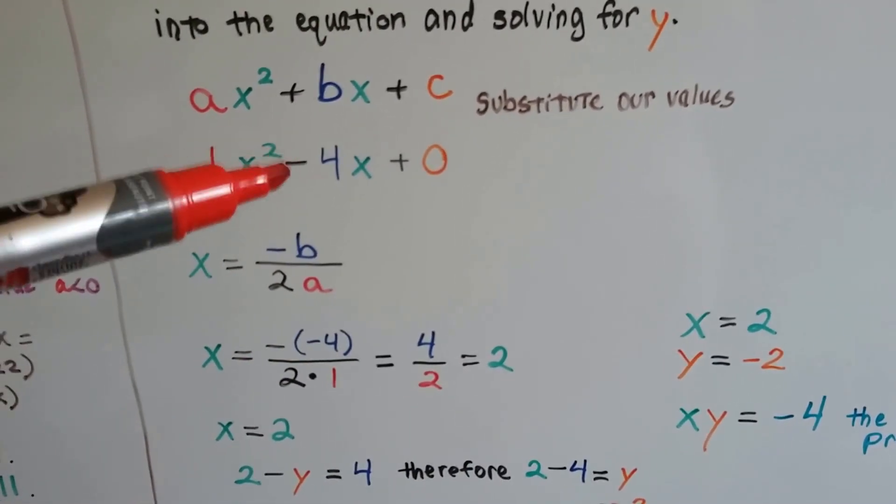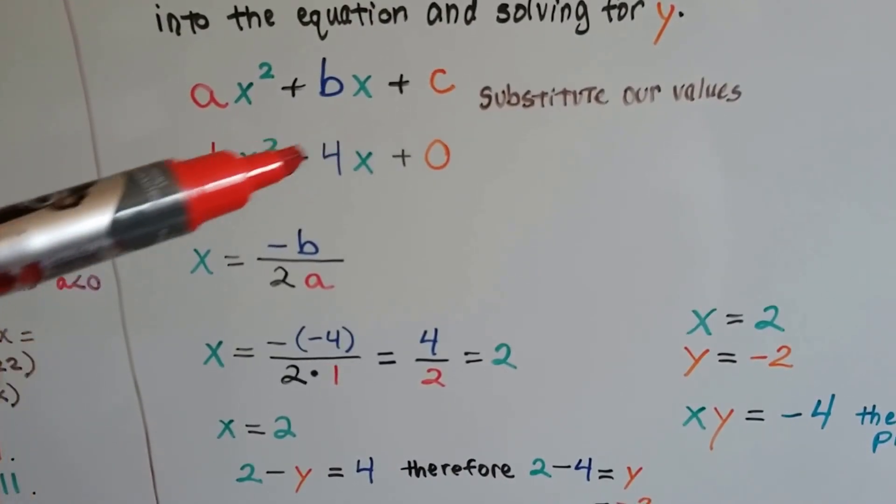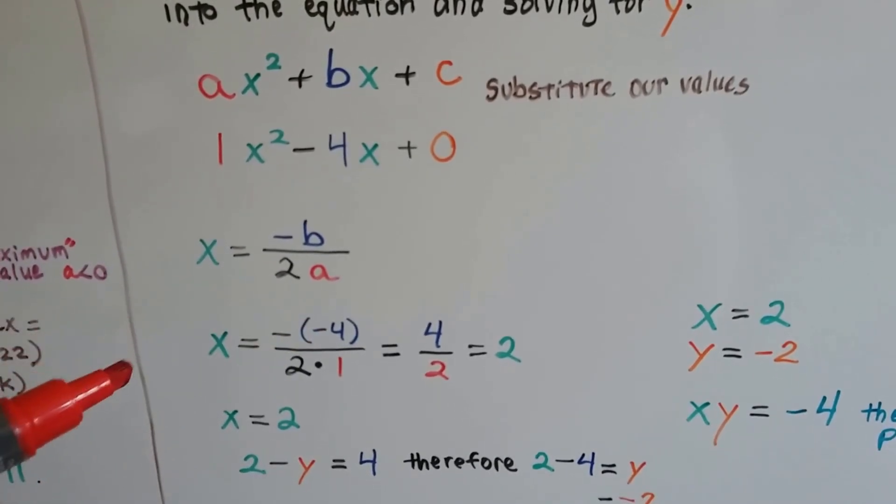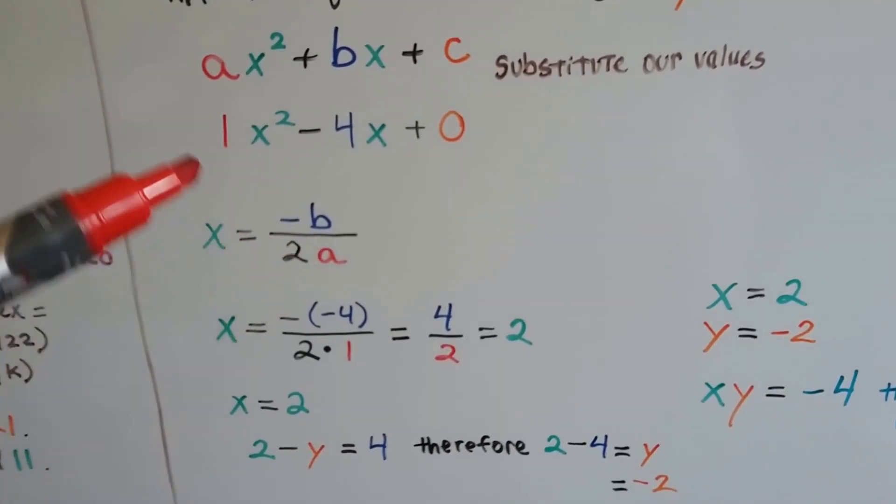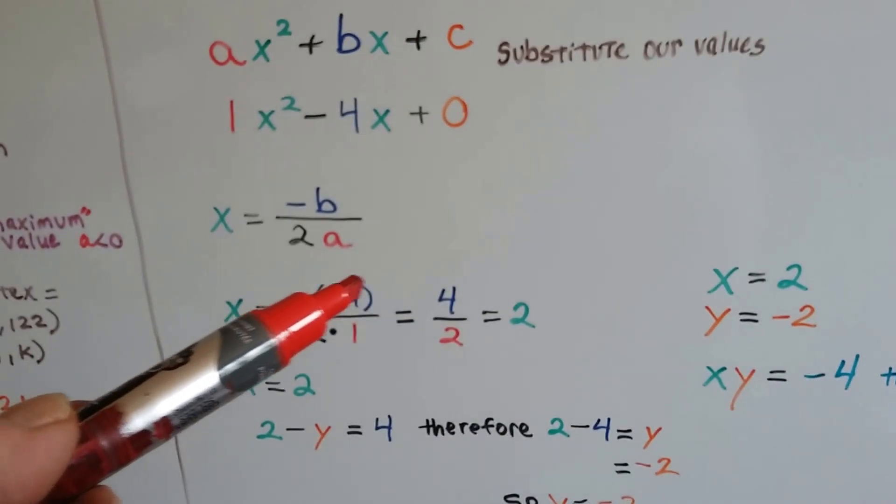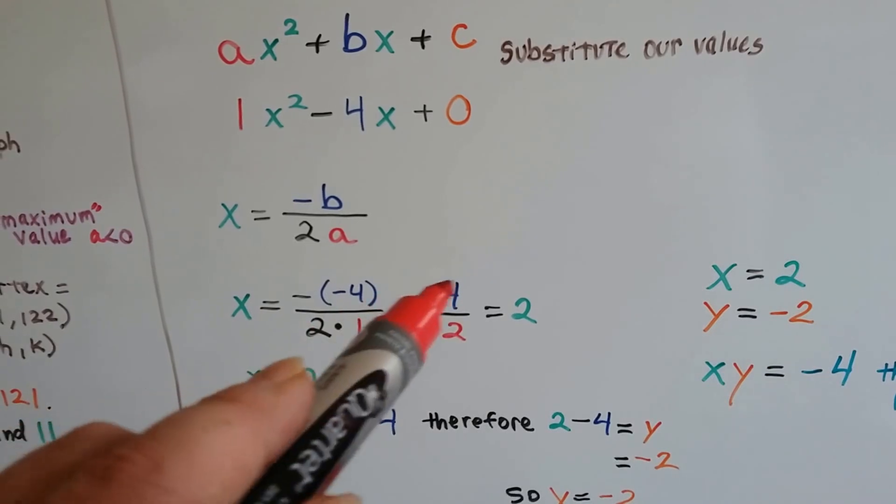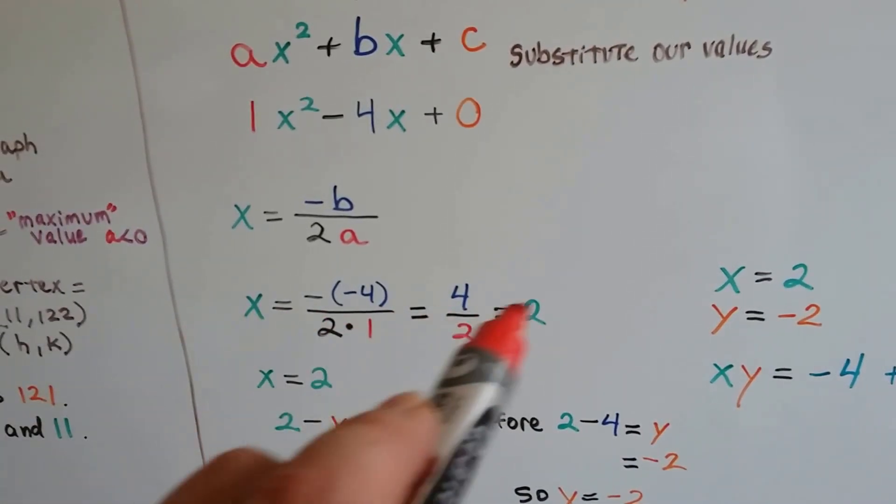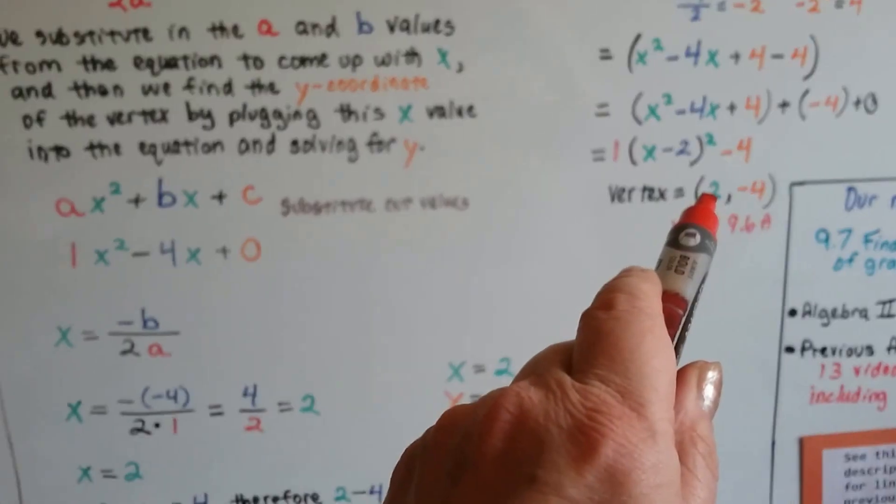We're going to do -b. Well, we already have -4, so a negative of -4 is what we have up here. Don't make the mistake of forgetting that that's a negative number. If you see a negative number for this middle term, you want this to be a negative of a negative for the -b value. I'm going to do 2 times 1, that's 2. So negative times -4 is a positive 4, divided by 2. We know x equals 2. Look, that's what we got over here too.